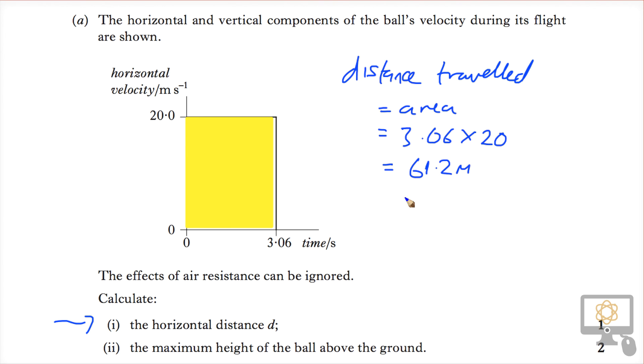Of course we can think about it in the other way, just thinking about the fact that distance is speed multiplied by time. So if the horizontal speed is 20 and the time is 3.06, we're doing the same thing as finding the area under the graph, and we get the same answer of 61.2. That's the obvious ways to solve this problem.